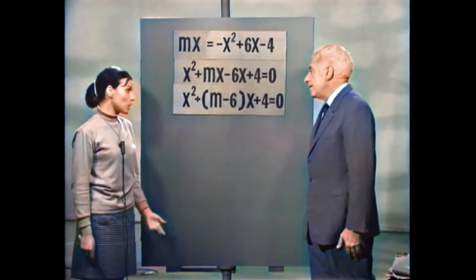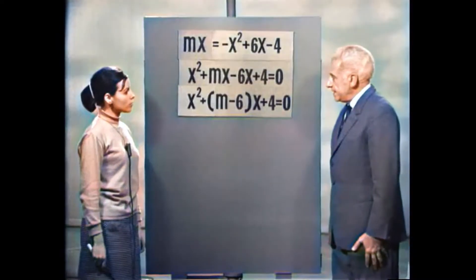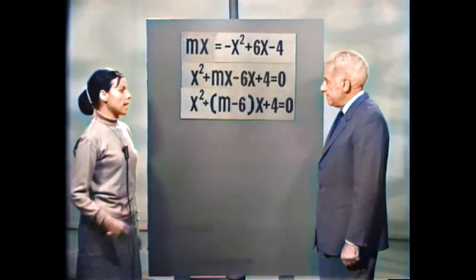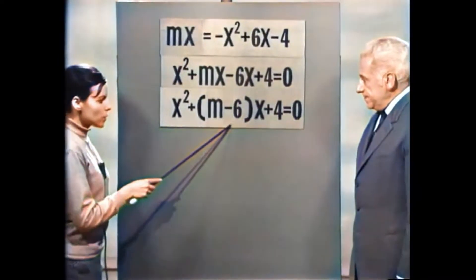זה תלוי בדיסקרימיננטה. אם הדיסקרימיננטה חיובית — יש שני פתרונות. אם הדיסקרימיננטה שווה ל-0 — יש פתרון אחד. אם הדיסקרימיננטה שלילית — אין פתרון. ומה היא הדיסקרימיננטה כאן? זהו M מינוס 6.